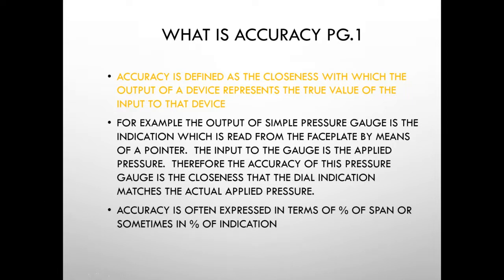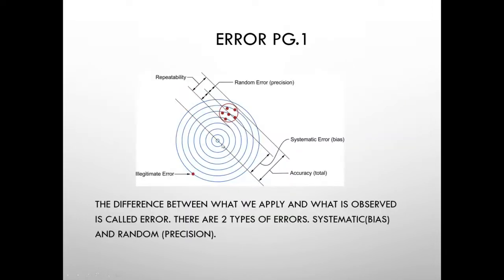Accuracy is often expressed in percent of span or percent of indication — there are many different ways of quantifying and qualifying accuracy. The accuracy statement centers around error. If everything is perfect, we have 100% accuracy. When we're not accurate, it's due to some type of error — the difference between what we've applied and what we actually see. We'll describe two types of errors: systematic or bias error, and random or precision error.